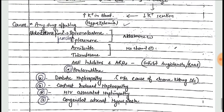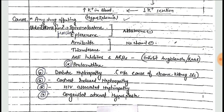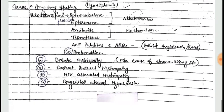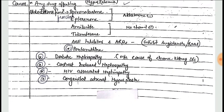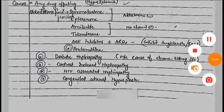Other causes of Type 4 RTA include anti-aldosterone drugs like spironolactone, eplerenone, amiloride, trimethoprim, ACE inhibitors, ARBs, pentamidine, diabetic nephropathy, contrast-induced nephropathy, HIV-associated nephropathy, and congenital adrenal hypoplasia.